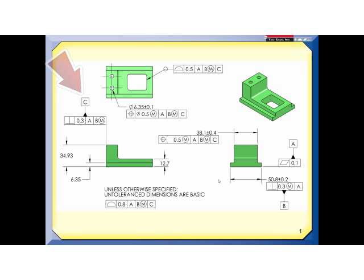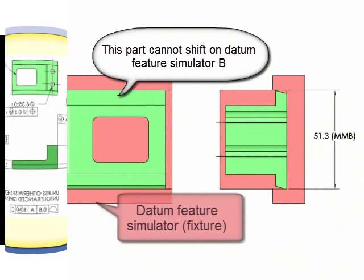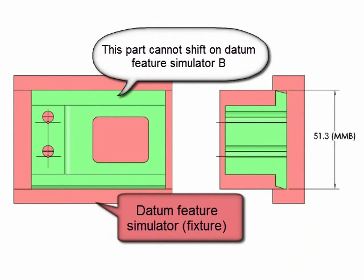Let's take a look at two different parts in the fixture or setup for this part where B has been modified at the maximum material boundary as you see in these feature control frames. On this part datum feature B is at its largest size and it has deviation and perpendicularity that causes it to fill the datum simulator so there is no datum shift.